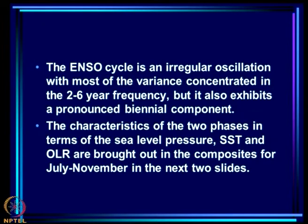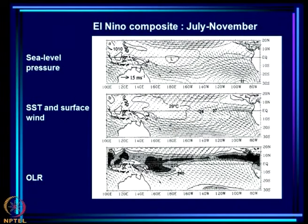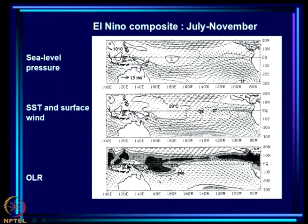The characteristics of the 2 phases in terms of sea level pressure, SSTA, and OLR are brought out in the composites for July to November in the next 2 slides. This is an El Niño composite for July to November. You see sea level pressure for El Niño on top, the Pacific Ocean, sea surface temperature, and OLR. There is a zonal band of low OLR — deep convection — right across the Pacific during El Niño, and it is quite intense.